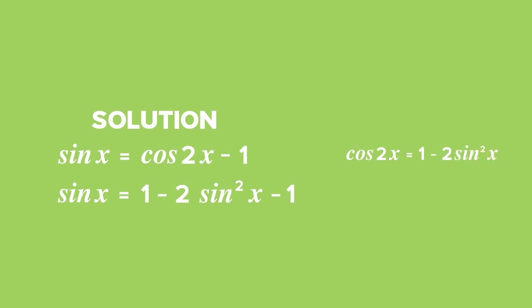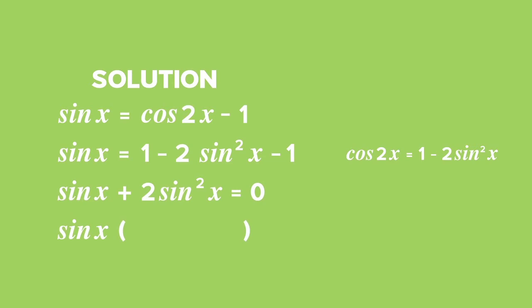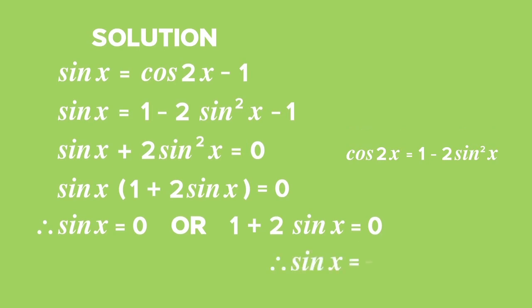Taking all terms to the left-hand side, we get sine x plus 2 sin squared x equals 0, which is a quadratic trig equation. To solve, factorize by taking out the highest common factor of sine x: sine x times (1 plus 2 sine x) equals 0. Since we have a factor times a factor equal to 0, we let each factor equal 0. Therefore, sine x equals 0, or 1 plus 2 sine x equals 0, which gives sine x equals negative 1 half.